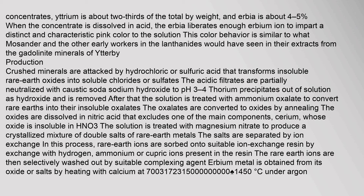Crushed minerals are attacked by hydrochloric or sulfuric acid, which transforms insoluble rare earth oxides into soluble chlorides or sulfates. The acidic filtrates are partially neutralized with caustic soda to pH 3 to 4, and thorium precipitates out as hydroxide and is removed. The solution is then treated with ammonium oxalate to convert rare earths into insoluble oxalates, which are converted to oxides by annealing. The oxides are dissolved in nitric acid, excluding cerium, whose oxide is insoluble in HNO₃. The solution is treated with magnesium nitrate to produce crystallized double salts of rare earth metals, which are then separated by ion exchange.